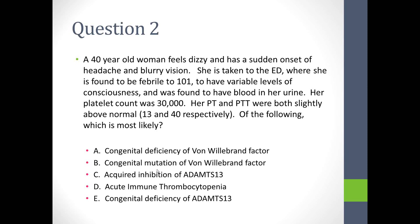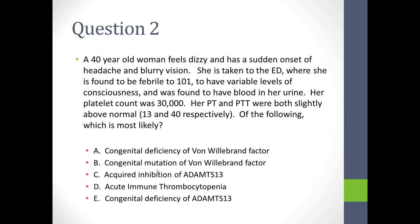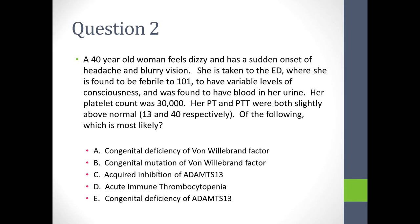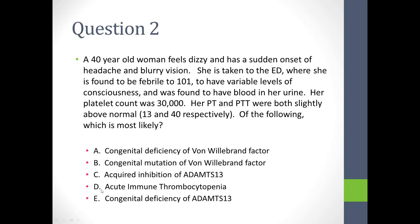Question two: a 40-year-old woman feels dizzy and has a sudden onset of headache and blurry vision. She's taken to the emergency department where she's found to be febrile to 101, with variable levels of consciousness and blood in her urine. Her platelet count is 30,000 and her PT and PTT are prolonged. Which of the following is most likely? A, a congenital deficiency of von Willebrand factor; B, a congenital mutation of von Willebrand factor; C, an acquired inhibition; D, autoimmune thrombocytopenia; or E, congenital deficiency of ADAMS-TS13.